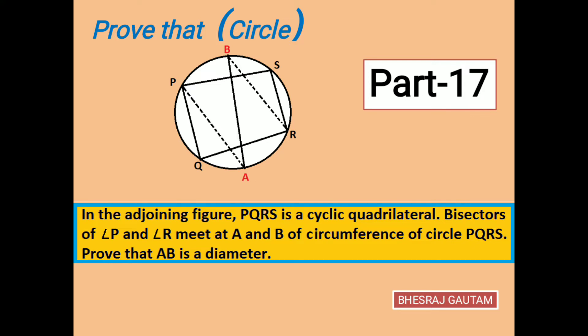PQRS is a cyclic quadrilateral with bisectors of angle P and angle R as shown in the diagram, meeting at two different points A and B at the circumference, and we have to prove AB is a diameter.